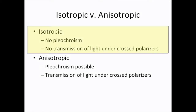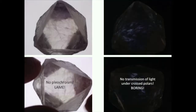The isotropic materials are particularly boring, if you recall from the previous video. They do not illustrate pleochroism under plane polarized light, and are always extinct under cross-polarized light, not changing really with a rotation. The reason isotropic materials and minerals display the optical properties that they do is because they are defined by having a single index of refraction.